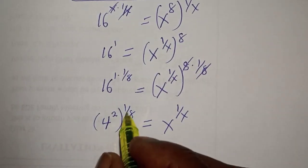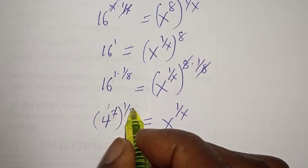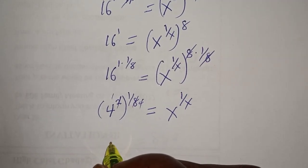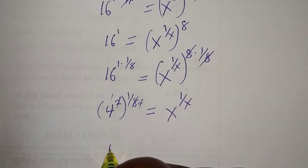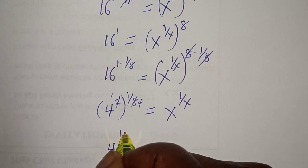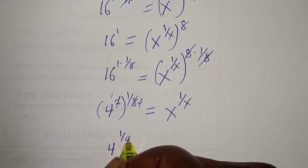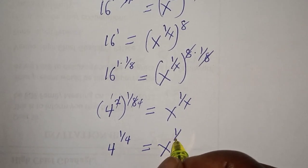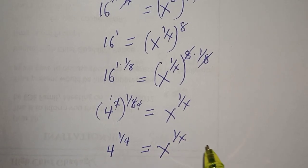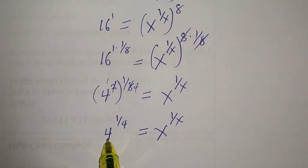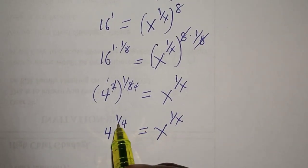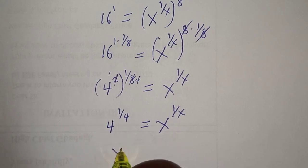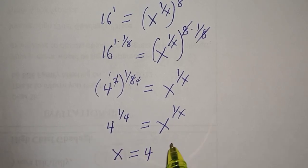The exponent simplifies: 2 times 1 over 8 gives 1 over 4. So we have 4 raised to power 1 over 4 is equal to s raised to power 1 over s. And from here, we can compare the base and the exponent. If you compare the base, s is equal to 4.